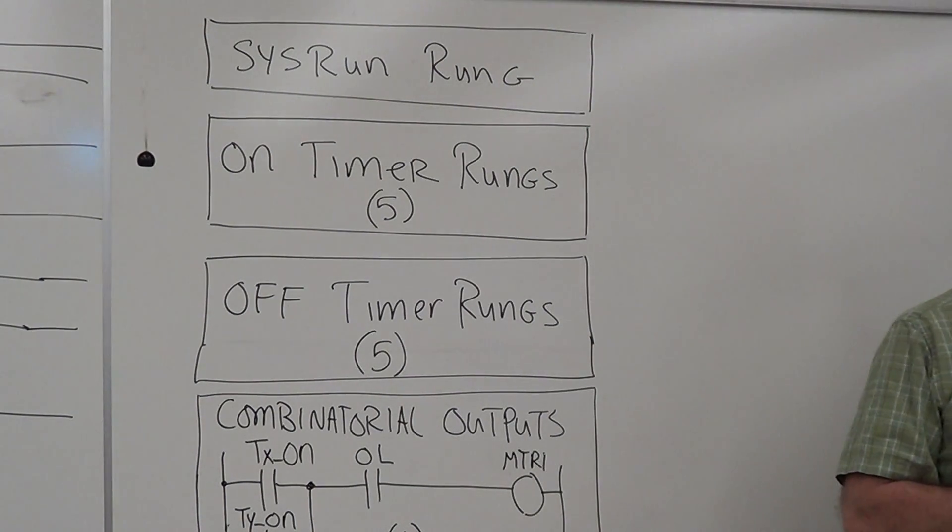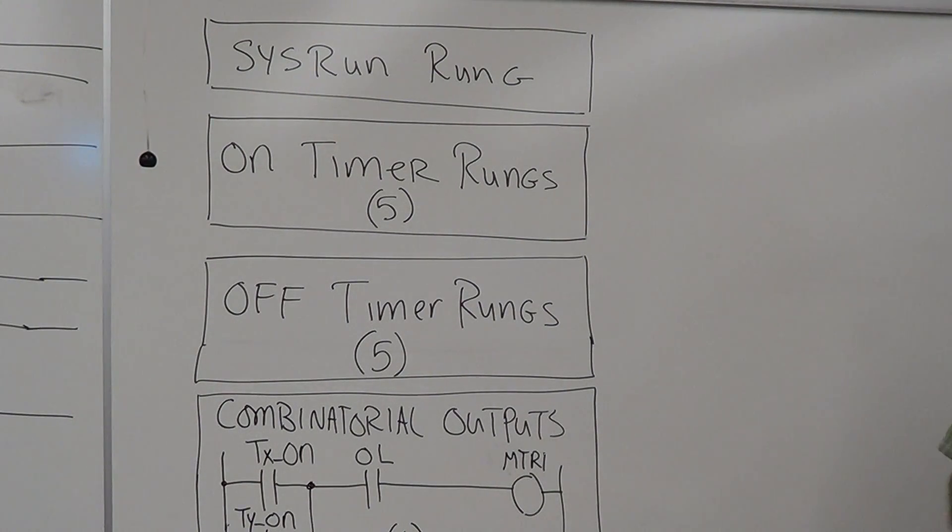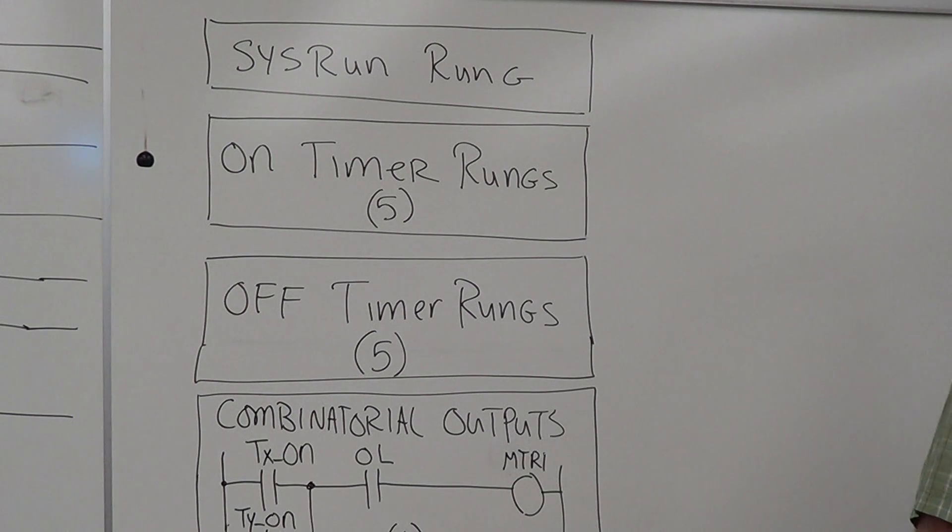You come over here, you've got your group of five on-delay timer rungs - five rungs, each with your on-delay timers, each of them driving little memory coils, internal coils M1, M2, M3 to let you know when that timer is on. Five off-delay timer rungs.